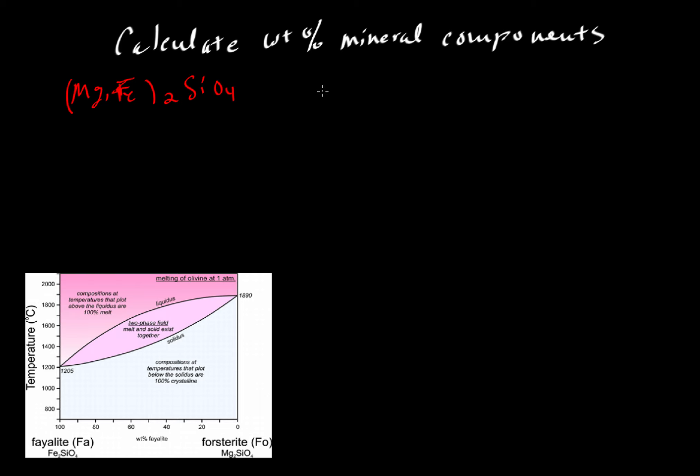This olivine has complete solid solution between magnesium and iron components, so we can take them in any proportion we like. For example, we could take a specific composition as Mg₁.₅Fe₀.₅SiO₄.